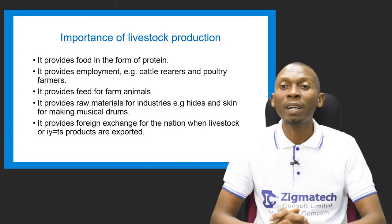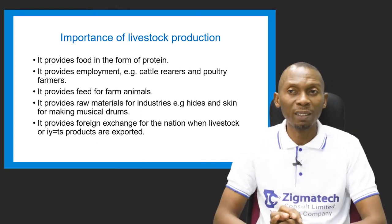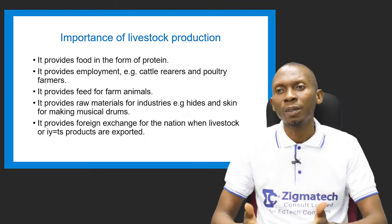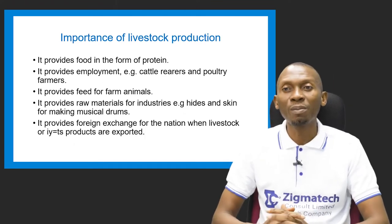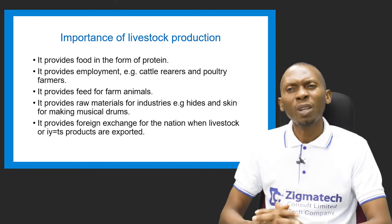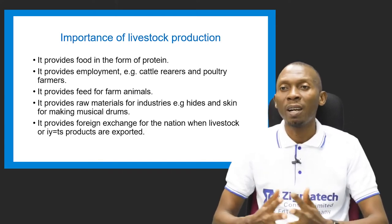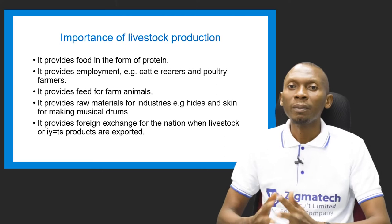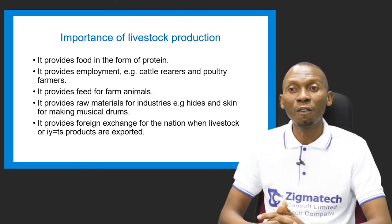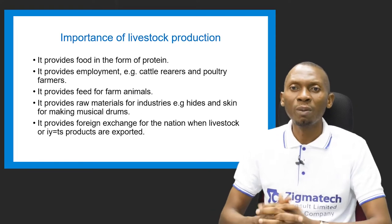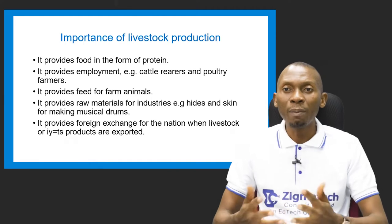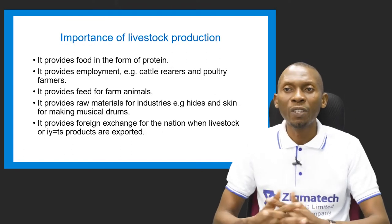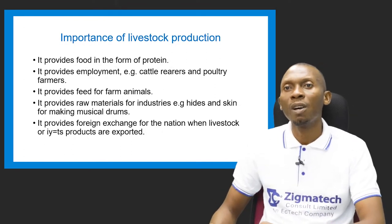Livestock production provides raw materials for industries, such as hides and skins used to make drums, belts, shoes, and jackets. It can also generate foreign exchange when products like milk and chicken are exported to other nations.